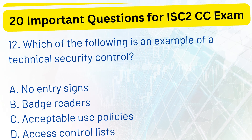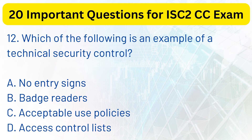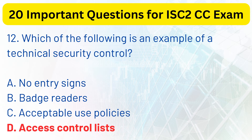Question 12. Which of the following is an example of a technical security control? a. No entry signs. b. Badge readers. c. Acceptable use policies. d. Access control lists. The correct answer is d. Access control lists.